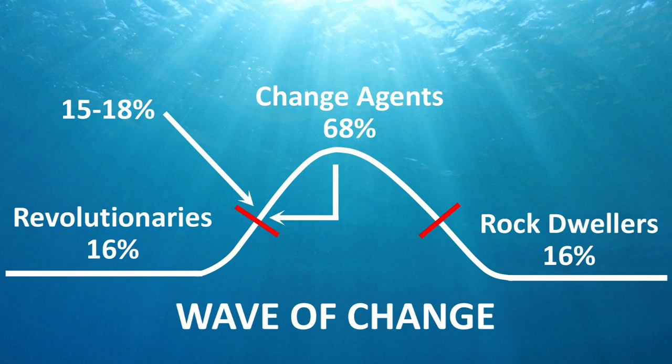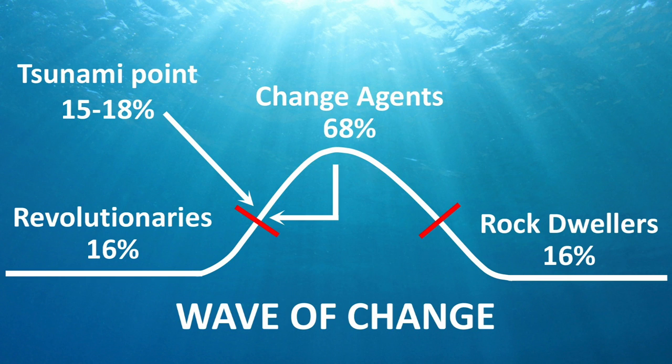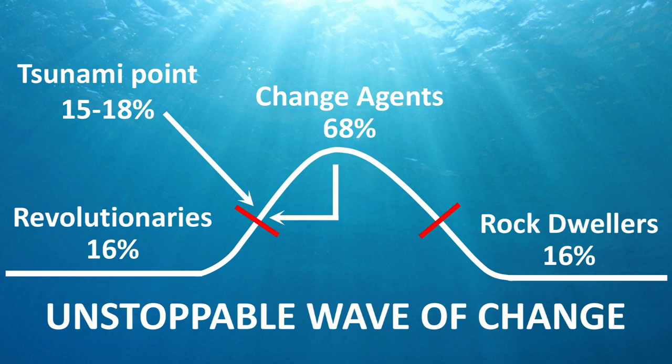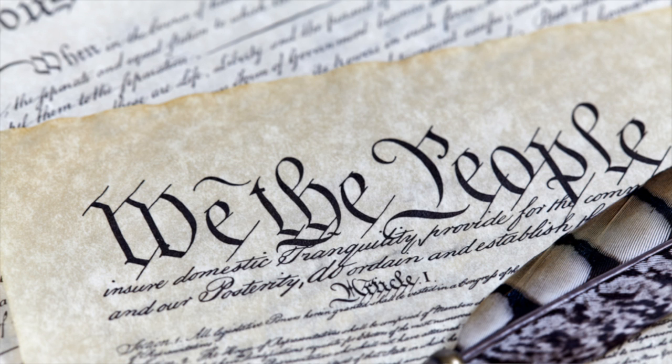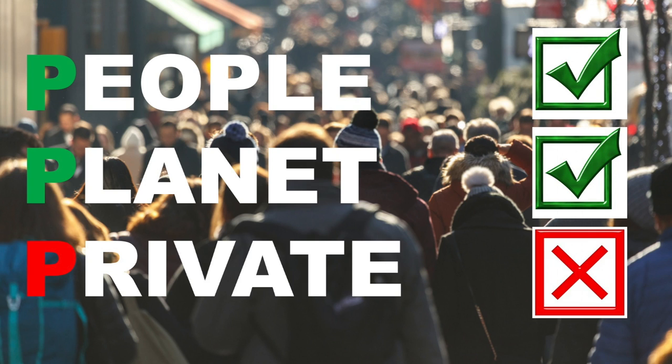But once we hit the 15% to 18% mark, we hit what Simon Sinek called the tipping point. I call it the tsunami point, because this is the point where the change agent will begin to adopt the idea and this will create an unstoppable wave of change. Now imagine that wave in every home, in every town, in every city around the world — that wave will trigger an economic revolution, by the people and for the people. The old failed economic model will cease to exist and will be replaced by a new model that puts people and planet before profit.